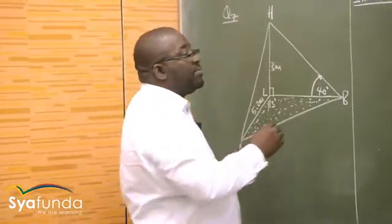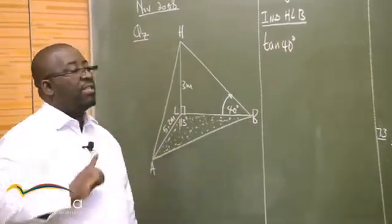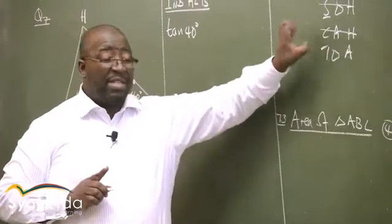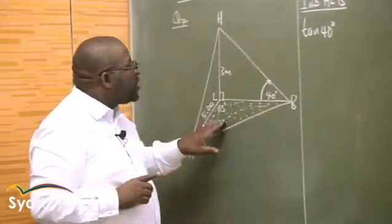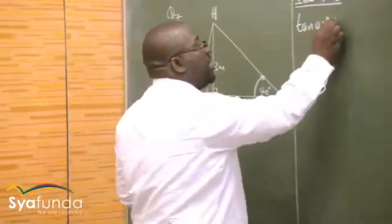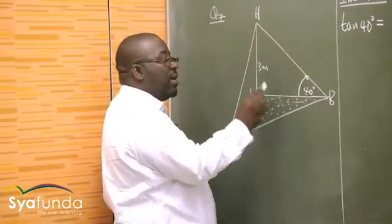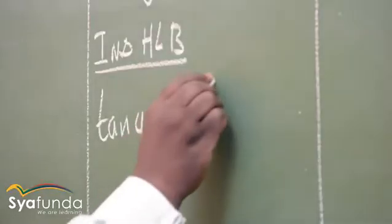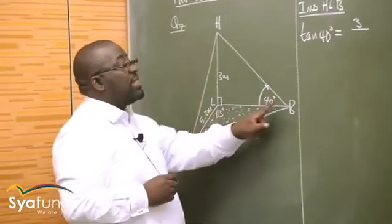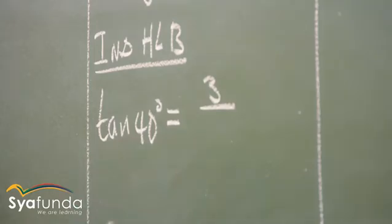Let's use it together. You've got tan of 40 degrees. The definition of tan is opposite over adjacent — remember, this happens only in a right angle triangle. I can't use that in the other two triangles because there's no 90 degrees there. Following the definition: tan of the angle is opposite over adjacent. The opposite side is 3 meters, so it is 3 over LB, because LB is the adjacent side that we're looking for.